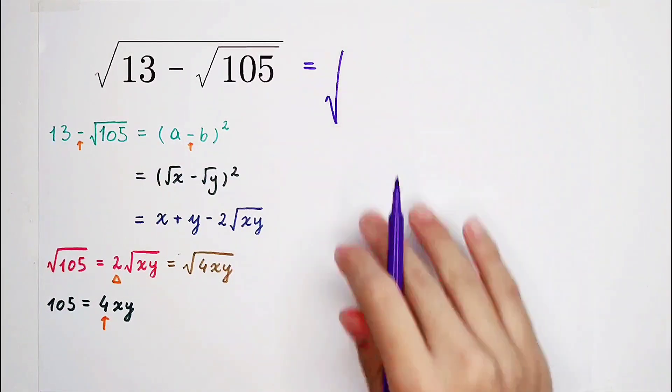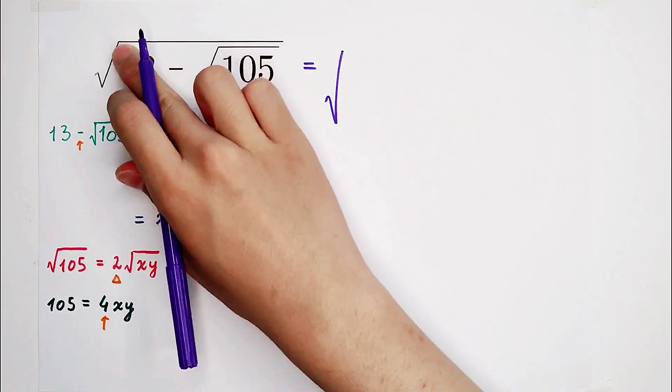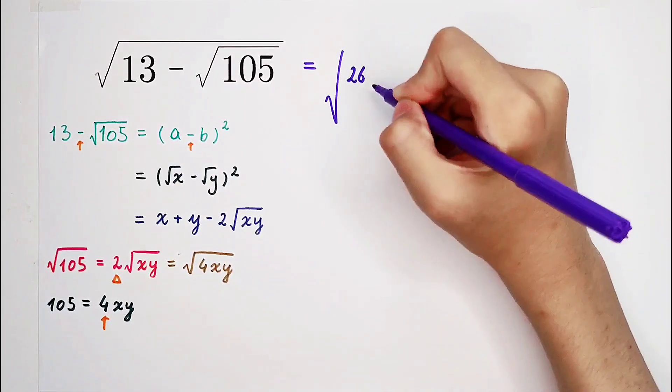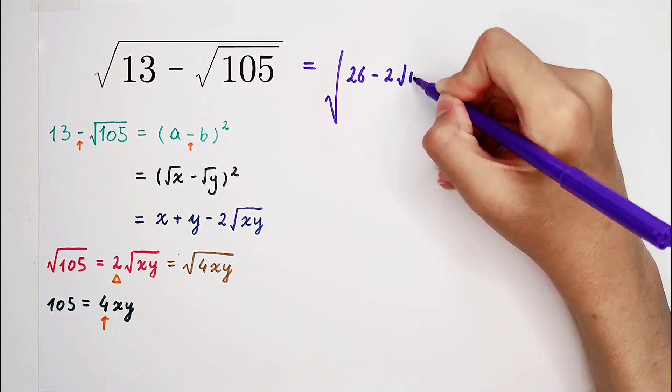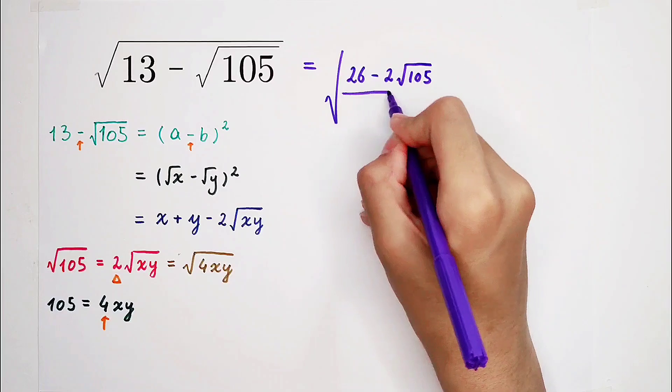So a good trick. That means I can multiply this thing by 2. Then it will be 26 minus 2 times square root of 105, and then over 2.